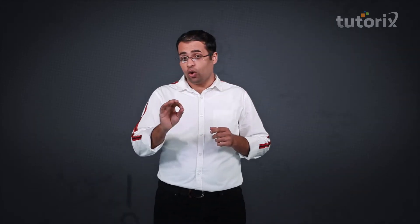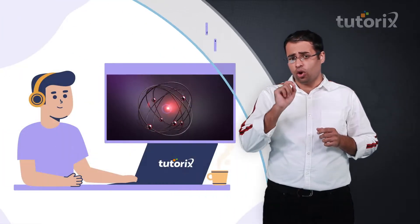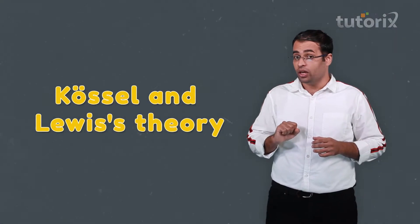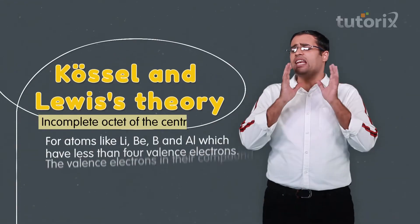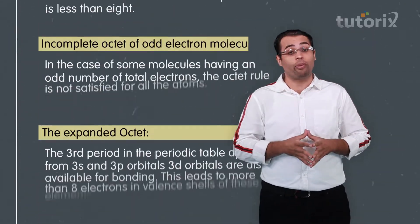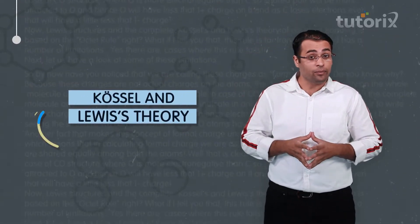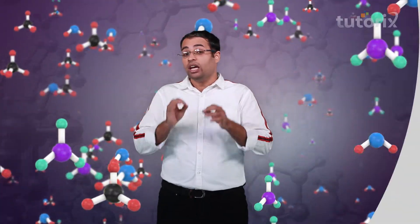By now we know about one theory of chemical bonding called the Kossel and Lewis's theory based on the octet rule. Now this theory had a number of drawbacks, the biggest drawback being that this theory does not talk about the structures or shapes of the molecule.